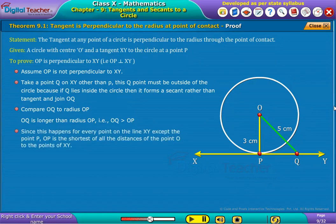Since this happens for every point on the line XY except the point P, OP is the shortest of all the distances of the point O to the points of XY.